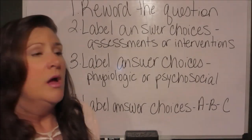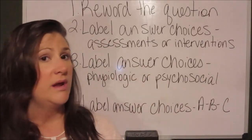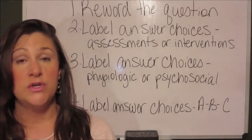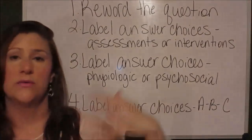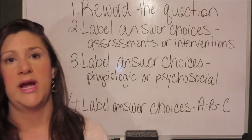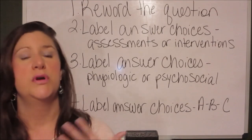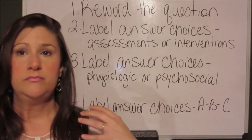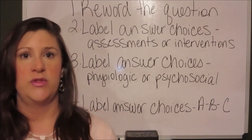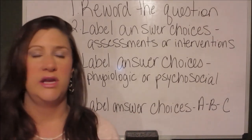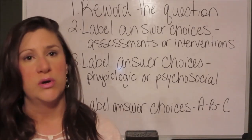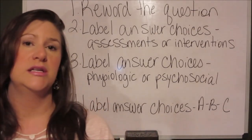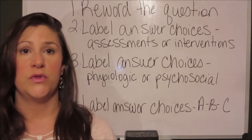Once you have everything labeled as assessment or intervention and have possibly eliminated some answer choices, Step 3 is to label every remaining answer choice as either physiologic or psychosocial. Maslow's hierarchy of needs places physiologic needs at the top of the pyramid — physiologic needs are more important. NCLEX considers pain a psychosocial need, so for the most part, pain is not a priority if you have other physiologic answer choices to choose from.